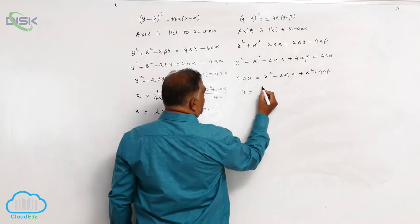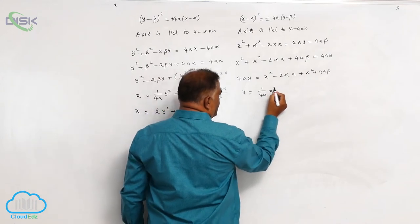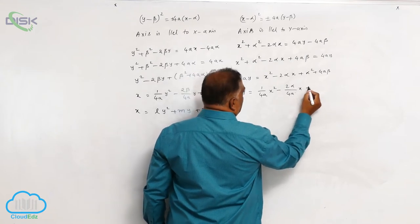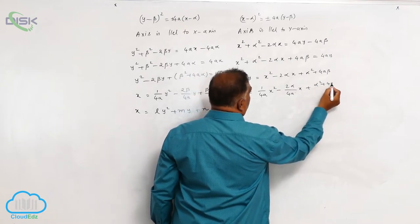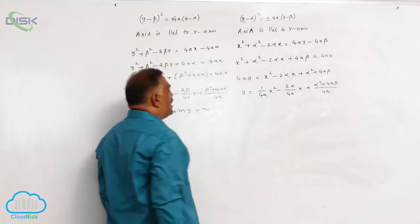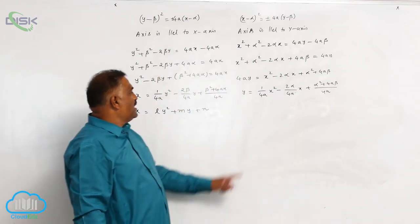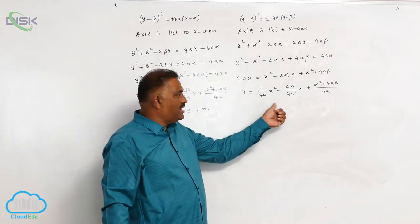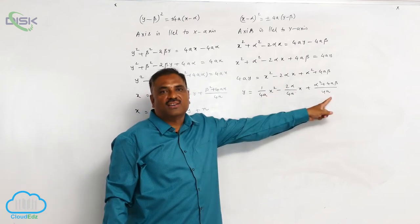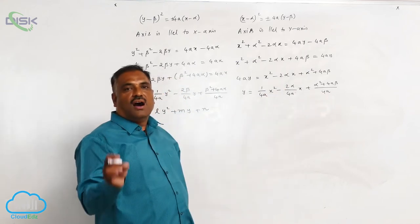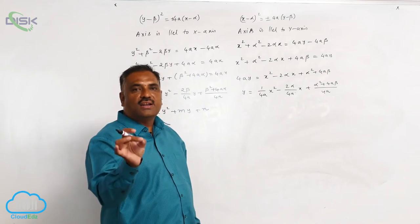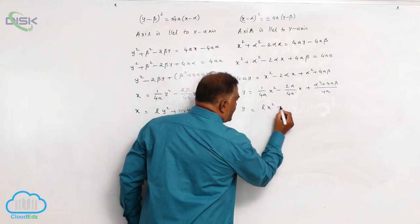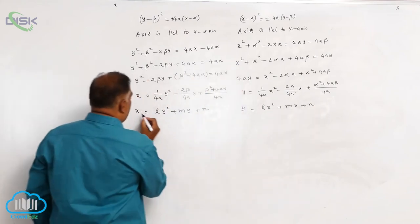Now, y = (1/4a)x² - (2α/4a)x + (α² + 4aβ)/4a. Again, you can see very clearly the right-hand side is in the format of an x² term, an x term, and a constant term. That means the right-hand side is a quadratic in x. So I can write y = lx² + mx + n.